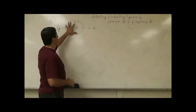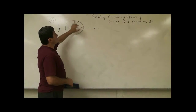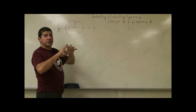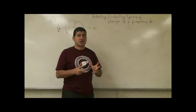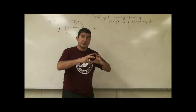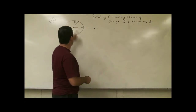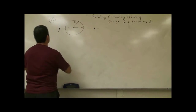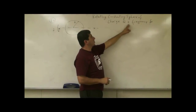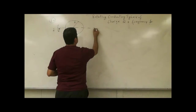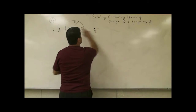We're going to do a magnetism problem. We have a rotating conducting sphere — a sphere that has charge on it. Since it's a conducting sphere, all of the charge will go towards the outside; none of it will occupy the interior. The sphere is rotating with a frequency f, the charge is q, and we want to calculate the magnetic field anywhere along the axis.